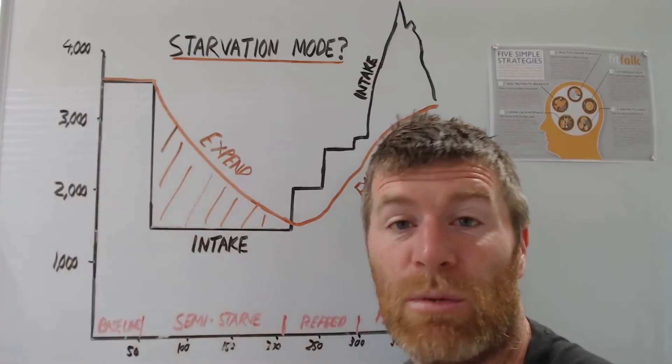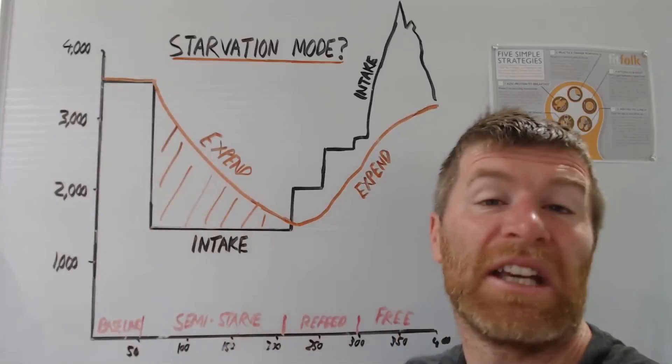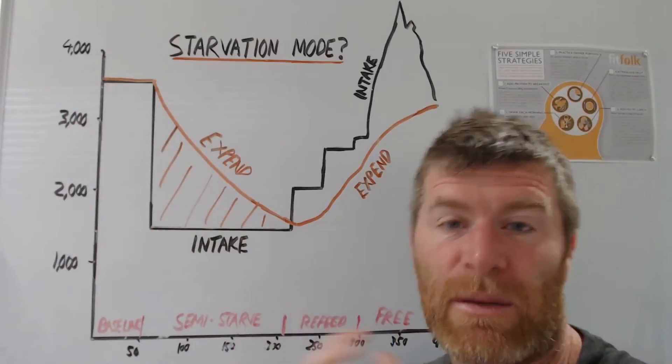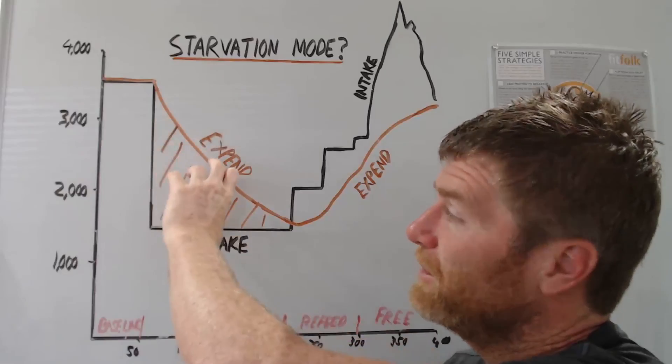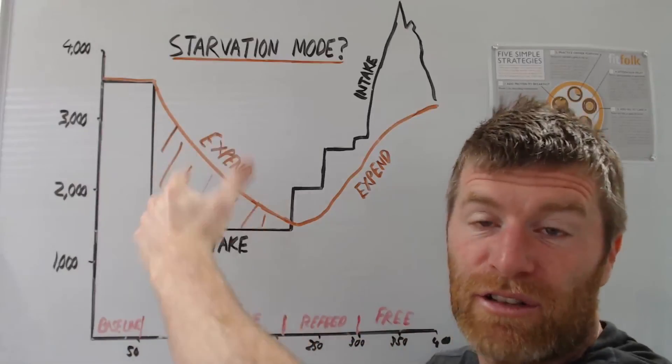In reality, doubly labeled water shows they eat 2,300. In America, it's the same. Guys, it's the same. We massively under-report.